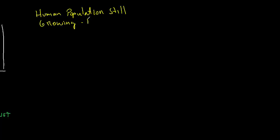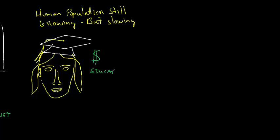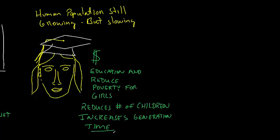The human population continues to grow, but has slowed somewhat. This is mostly due to efforts to educate and bring girls out of poverty. This reduces the number of children on average, but more importantly delays how soon they begin having children and increasing the time between generations has a larger impact on population growth than anything else.